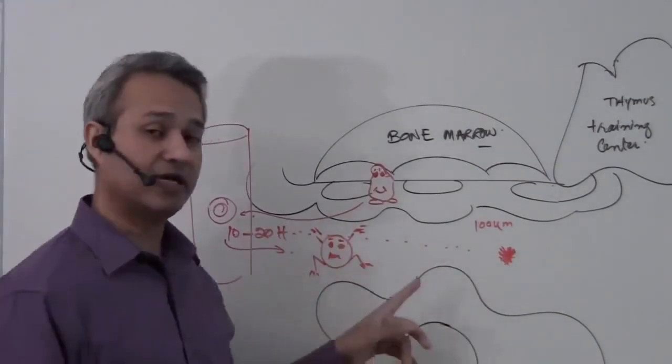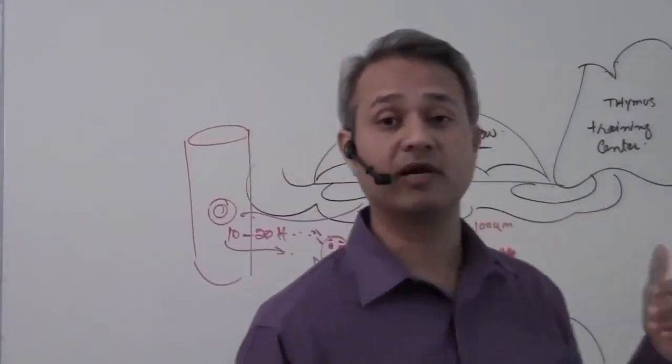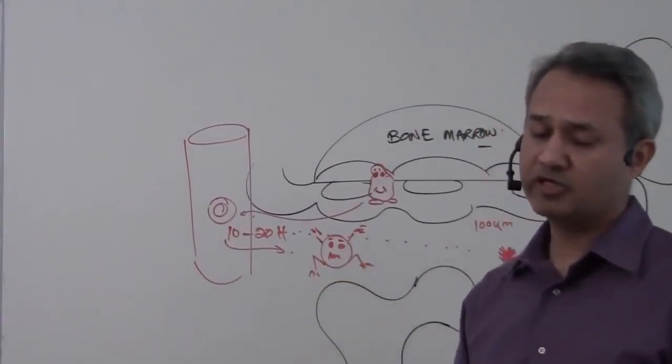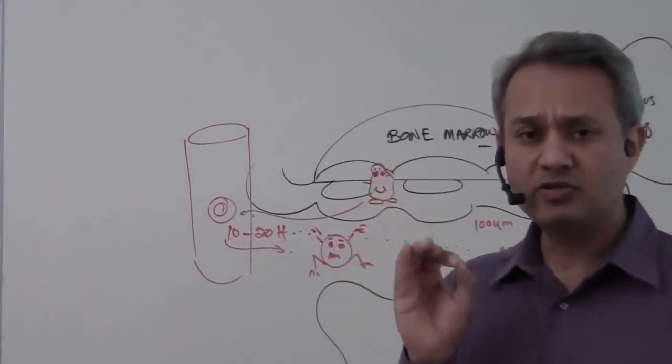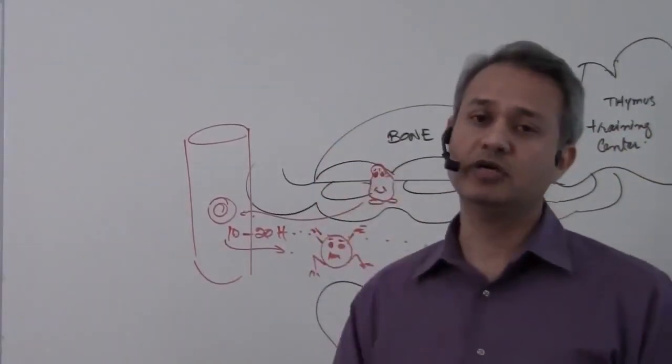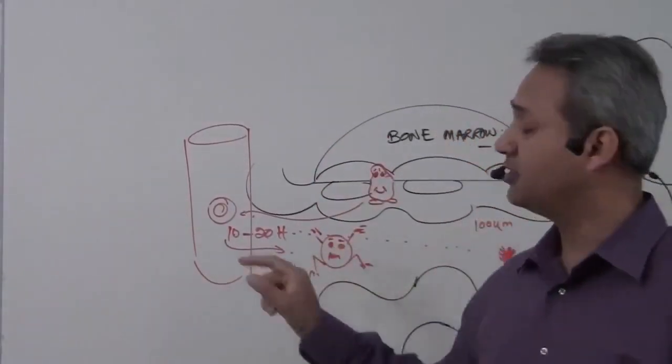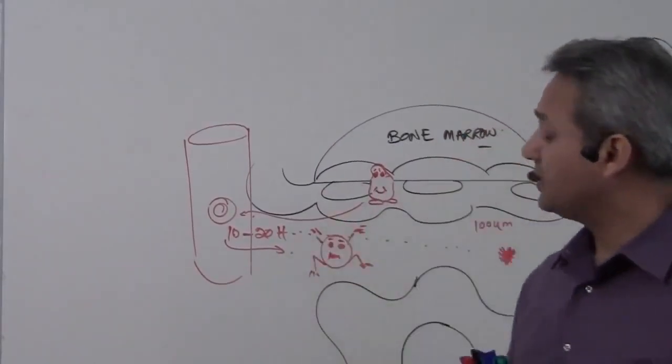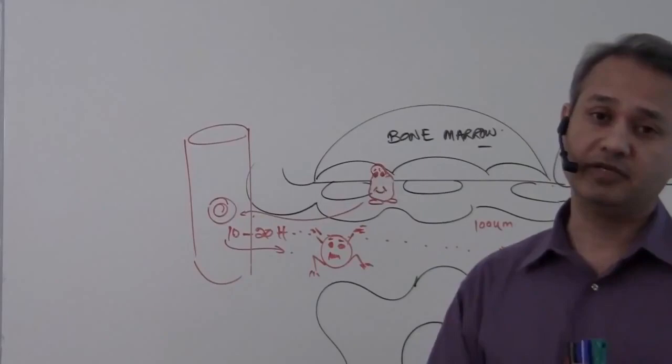So chemotactic factors can go up to 100 micrometers, although the blood vessels are found within the 50 micrometers. That means whenever a tissue damage or infection would occur, it will be for sure that the chemotactic factors will be going out into the blood vessel and monocytes and neutrophils will be coming in.